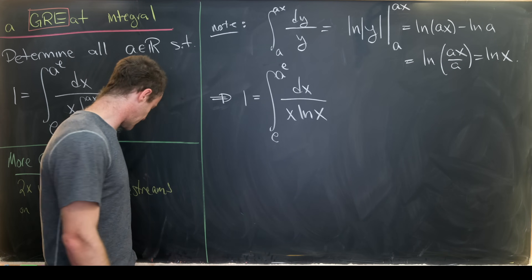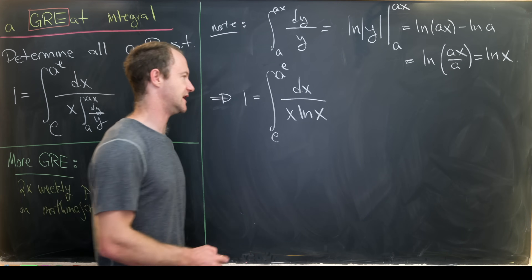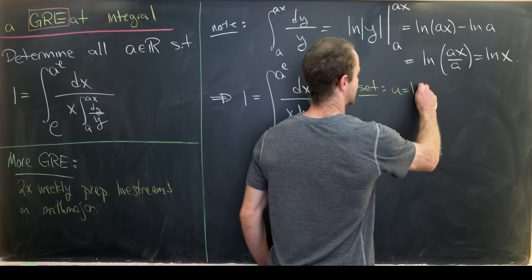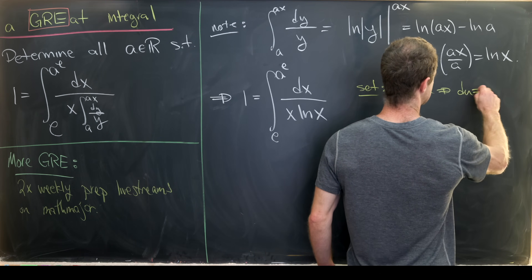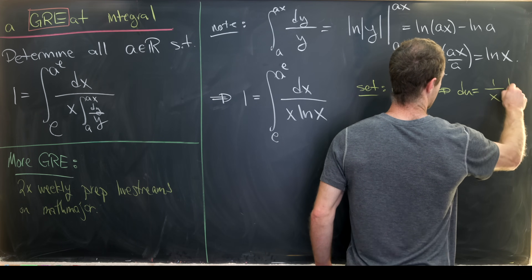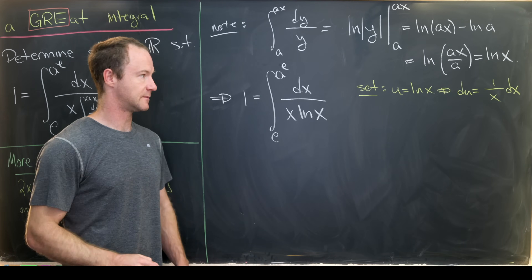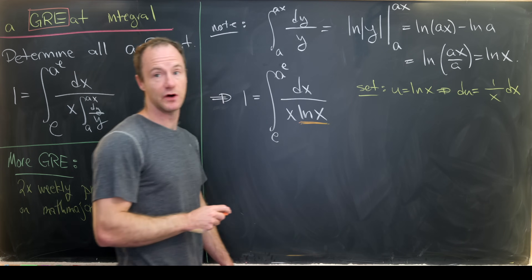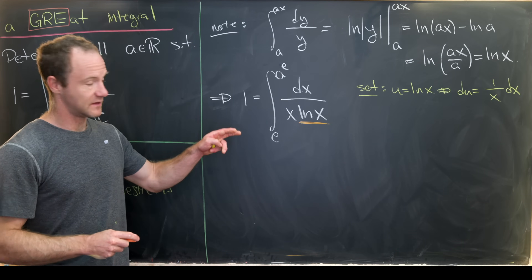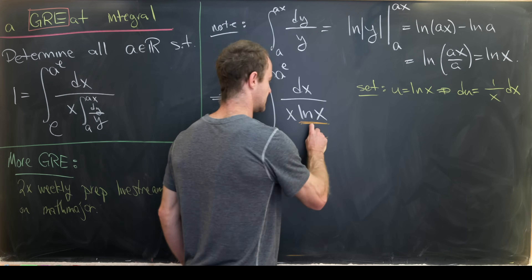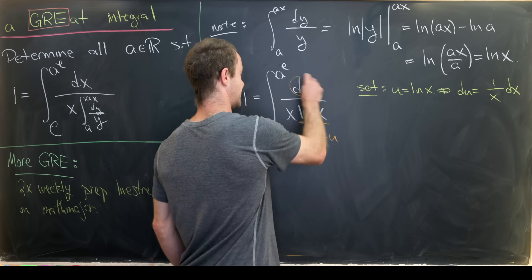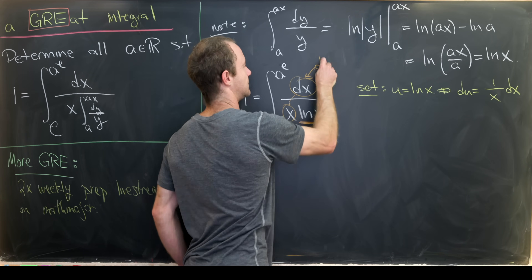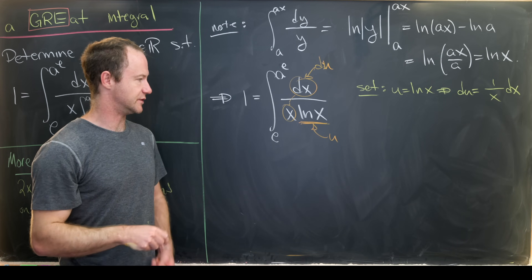This is set up for a pretty standard u-substitution. Let's set u equal to the natural log of x, which means du equals 1 over x dx, or dx over x. The motivation is that we have a function composed within another function — the natural log is composed in the reciprocal function — and this function's derivative is also part of the integral. Those are the two main reasons you'd want to do a substitution.